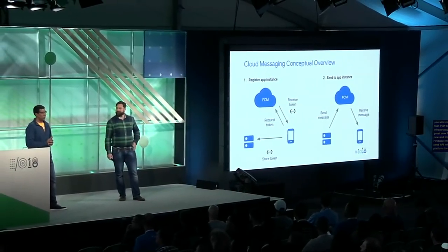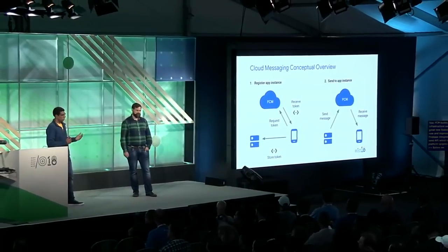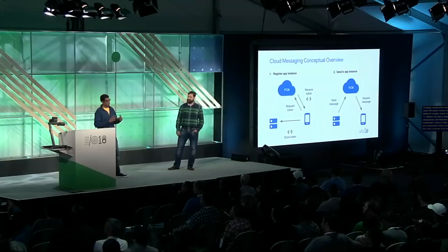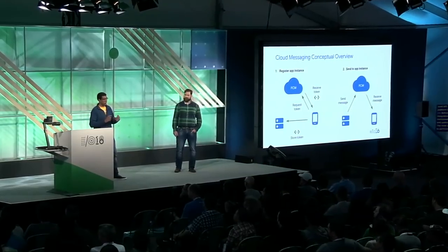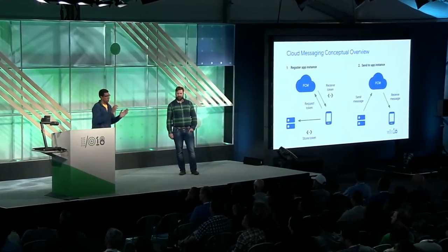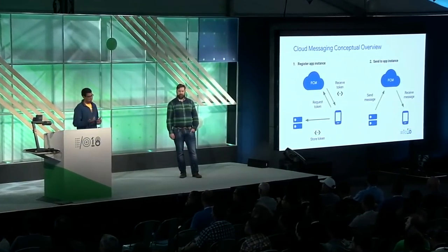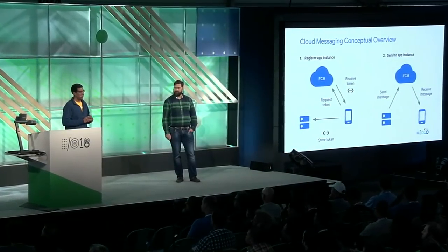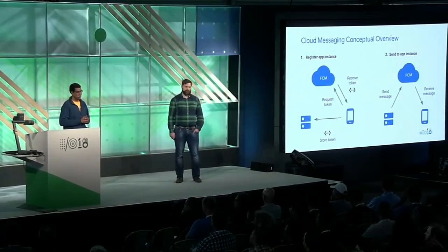Before we take a deep look into the integrations and features, I'd like to take a step back and understand some basic concepts in FCM. The most common use case is to send a message to a particular app instance. Behind the scenes, the SDK gets a token from the FCM cloud, and this token acts as an address for the device. Whenever you want to send a message to this device, you need this token. Apps upload this to their servers so that when it's time to send the message, the server knows how to reach this device.